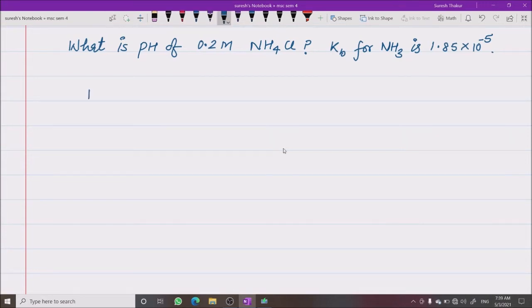Ammonium chloride, if you hydrolyze it, an aqueous solution of ammonium chloride will give ammonium hydroxide along with HCl.